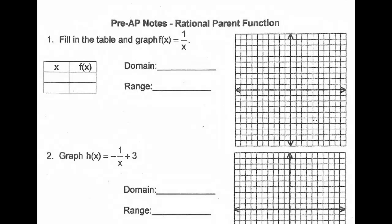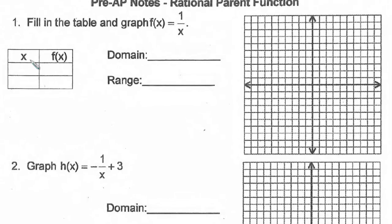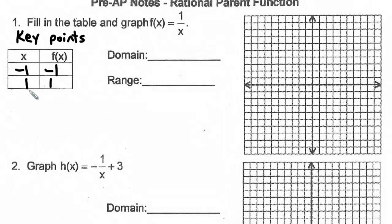We begin unit 14 with graphing rational parent functions. Today we're just going to look at graphing a basic parent function. The key points in the parent rational function are negative 1, negative 1, and 1, 1.